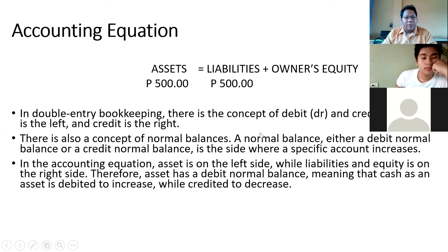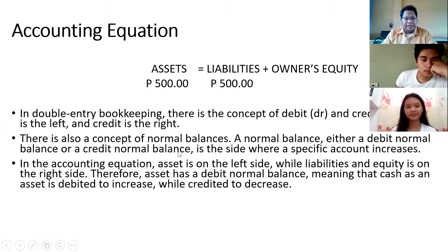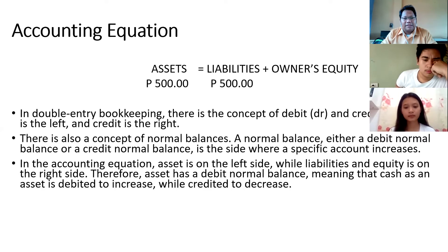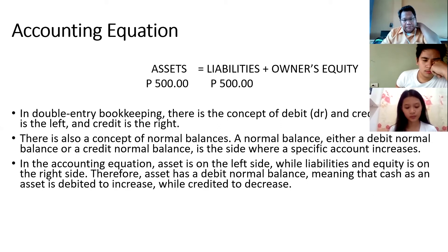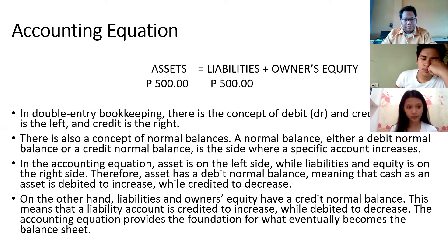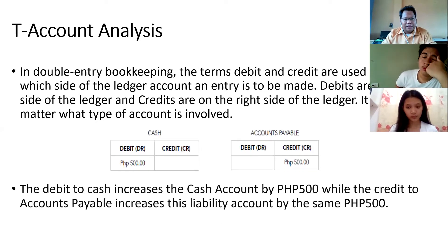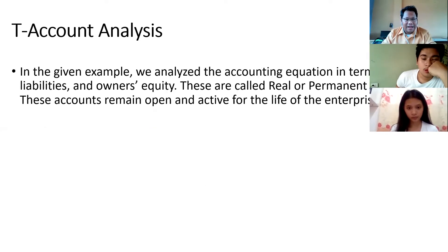In the accounting equation, the asset is on the left side, while liabilities and equities are on the right side. An asset therefore has a debit normal balance, while a liability or an owner's equity will have a credit normal balance. This is a sample of the T-account analysis.